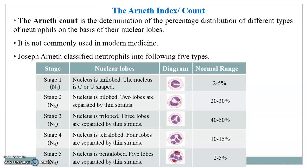Stage 2 (N2) has a bilobed nucleus where the two lobes are separated by thin strands, with a normal range of around 20–30%. Stage 3 (N3) has a trilobed nucleus, with three lobes separated by thin strands, and a normal range of around 40–50%.